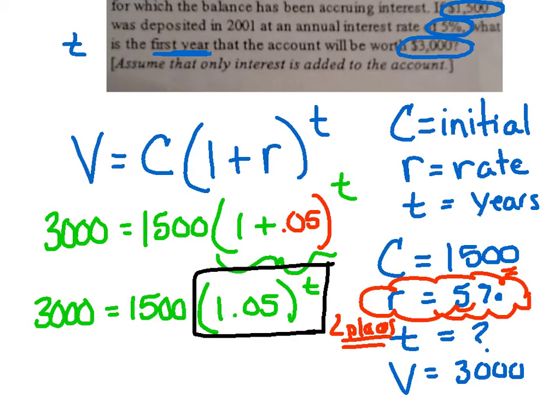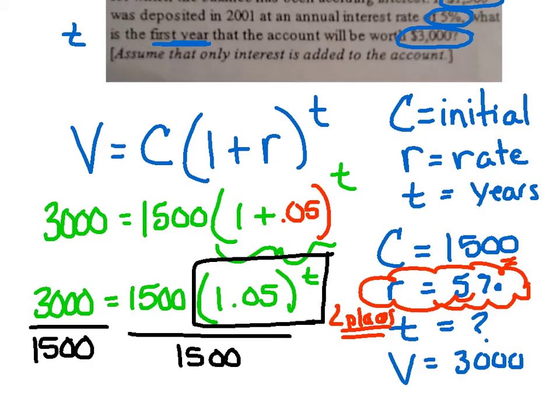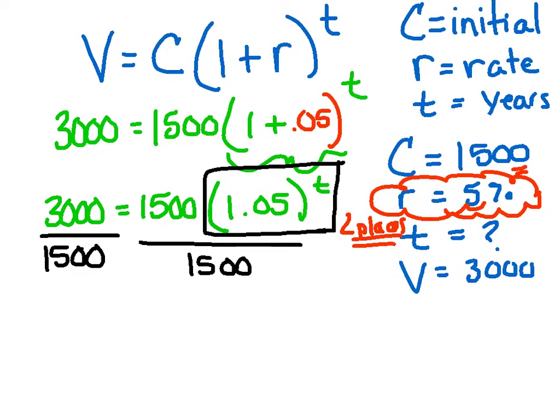Our goal is to first get that by itself. So I have to get rid of the 1,500 by dividing it from both sides. This happens to be just a nice old 2. And I still have my 1.05 to the t.